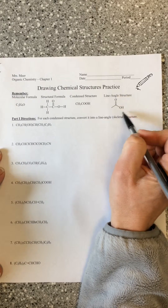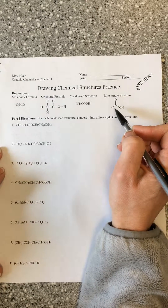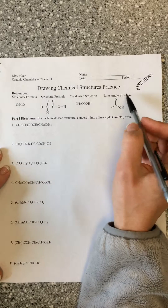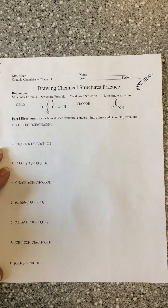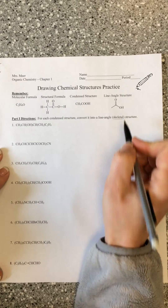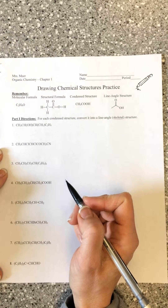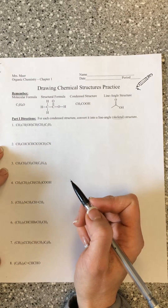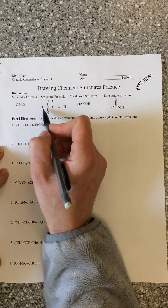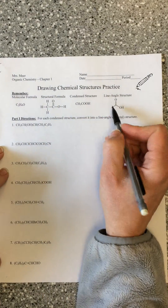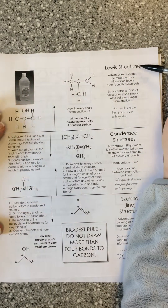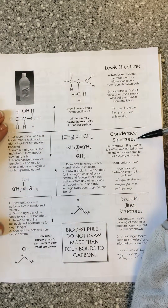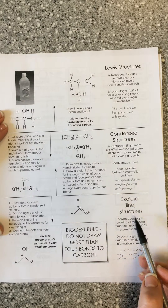To draw lots of molecules quickly, we'd like a more simplified approach. We use what this worksheet calls a line angle structure — referred to as a skeletal structure in the notes. It's a simplified way of representing the same structural information. There was a handout provided in class that talks about how to interconvert between Lewis structures, condensed structures, and line structures.